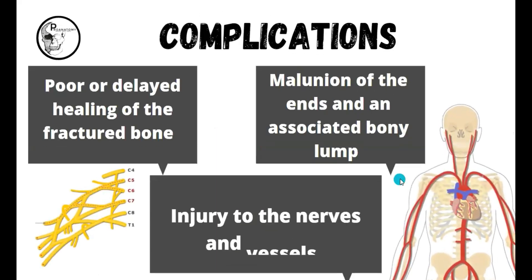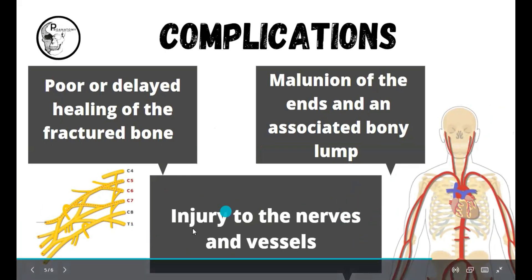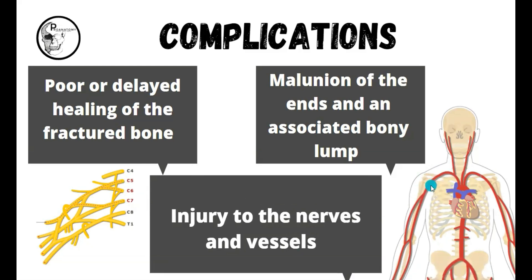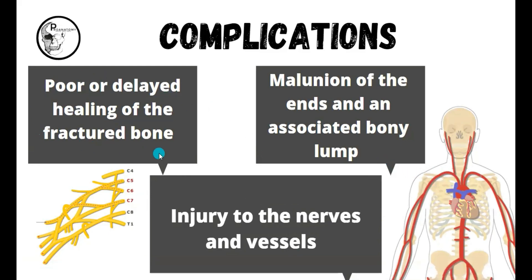Let's see what complications are caused by the clavicular fracture. The relations of the clavicle tell us about the complications — the structures related to the clavicle can get injured. The nerves and vessels passing next to it, for example the brachial plexus passing behind the clavicle shaft and the subclavian artery, can be injured, causing further complications to the upper limb blood supply as well as nerve supply. Another complication is poor or delayed healing of the fractured bone. The clavicle bone is very slow to heal, so if a fracture happens at an older age, the chances of healing are very low and the healing process will be very slow.